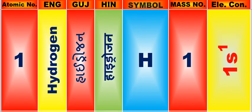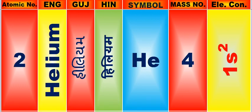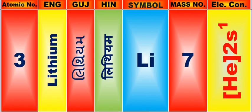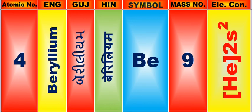Atomic number is 1, name of atom is Hydrogen. Atomic number is 2, name of atom is Helium. Atomic number is 3, name of atom is Lithium. Atomic number is 4, name of atom is Beryllium.